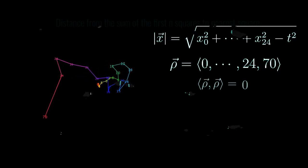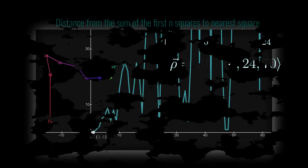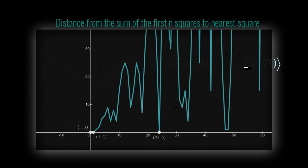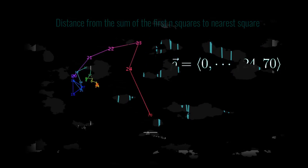And 24 is the only number for which this holds, apart from trivial cases like 0 squared equals 0 squared and 0 squared plus 1 squared equals 1 squared. So apart from these two trivial cases, 24 is the only number for which the sum of the first n squares is a square.